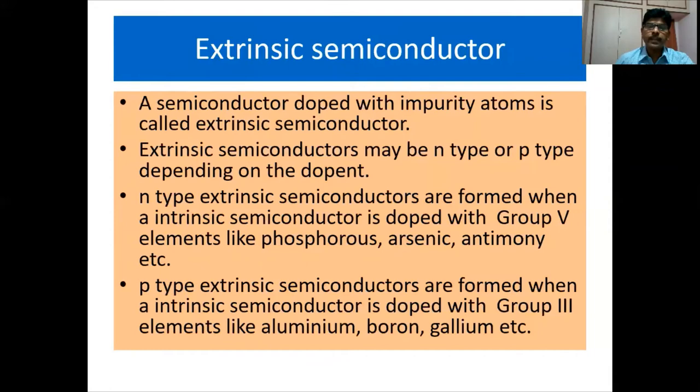Extrinsic semiconductors may be N-type or P-type depending on the dopants. Dopants are impurity atoms that we add to a pure semiconductor to create an extrinsic semiconductor. N-type extrinsic semiconductors are formed when an intrinsic semiconductor is doped with group 5 elements like phosphorus, arsenic, antimony, etc. P-type extrinsic semiconductors are formed when an intrinsic semiconductor is doped with group 3 elements like aluminum, boron, gallium, etc.